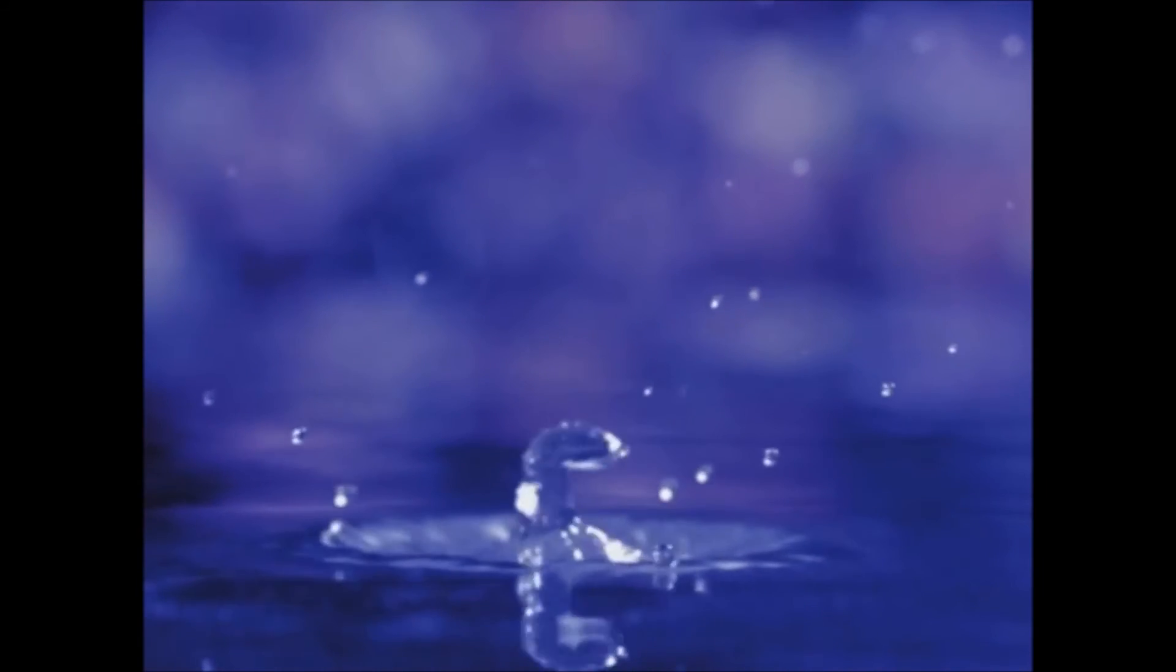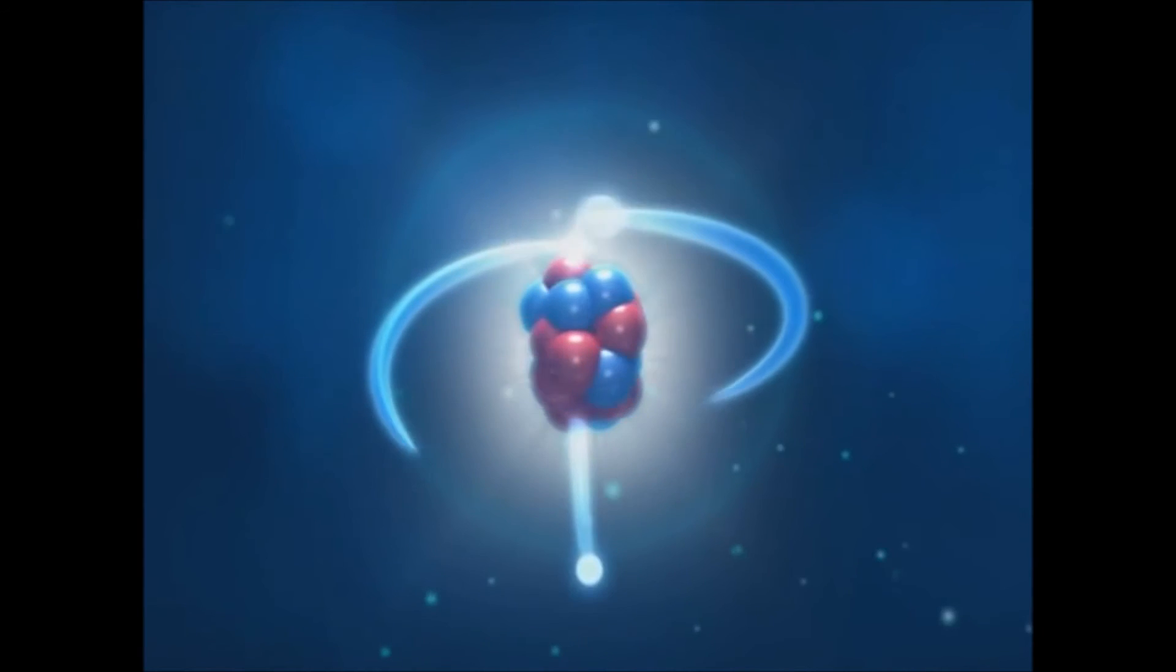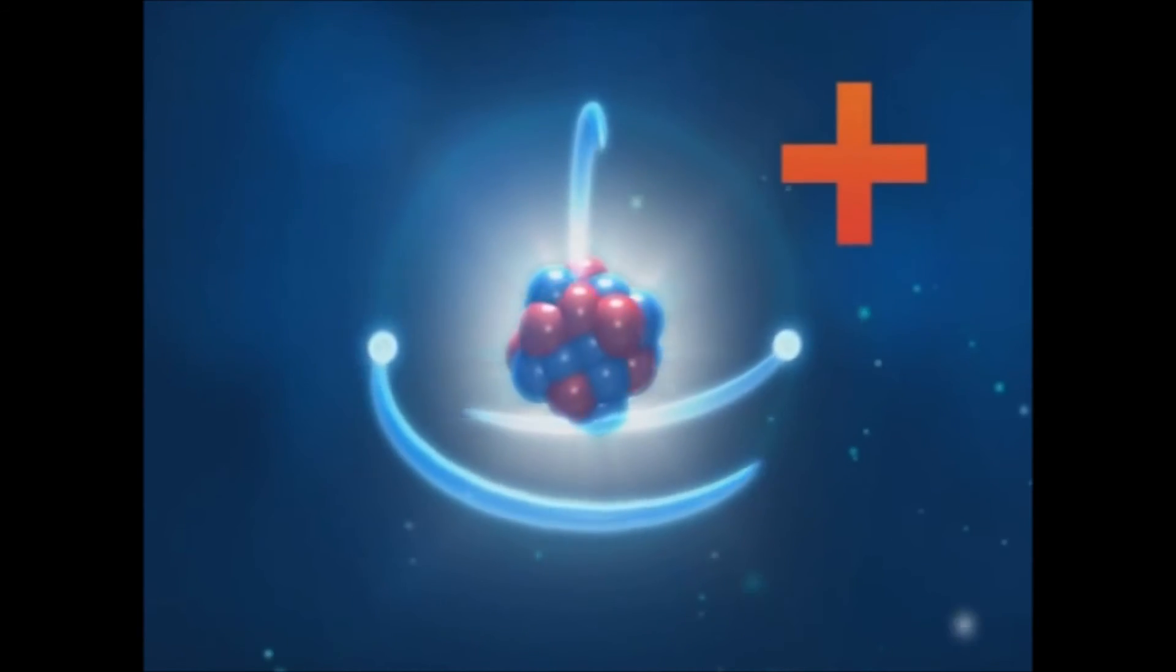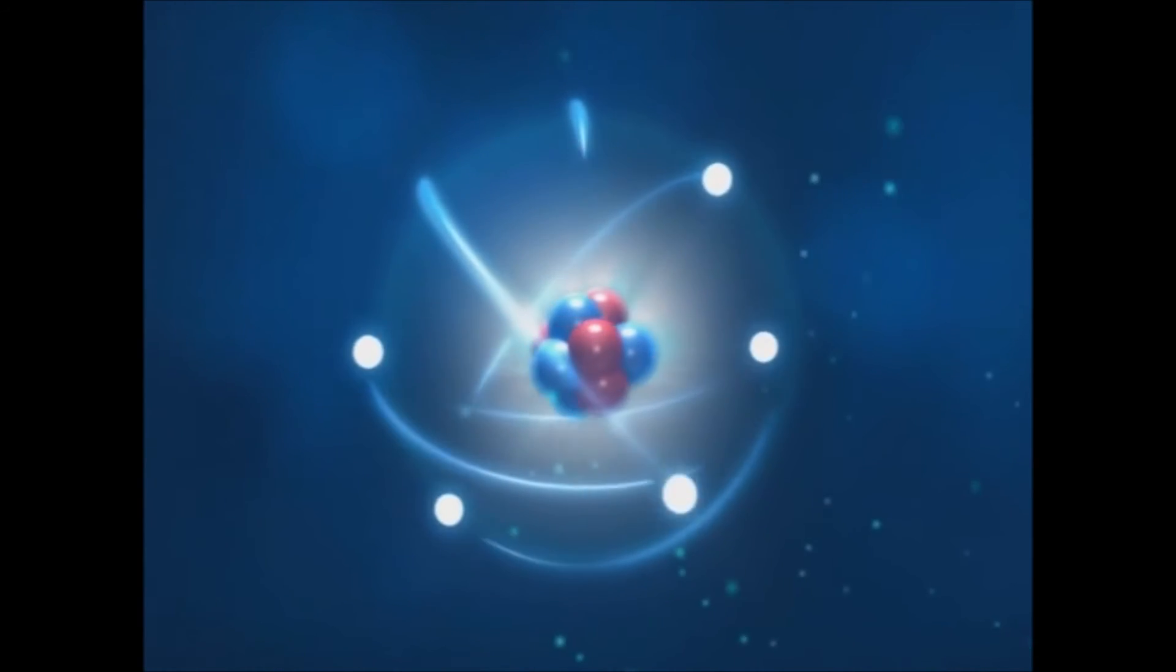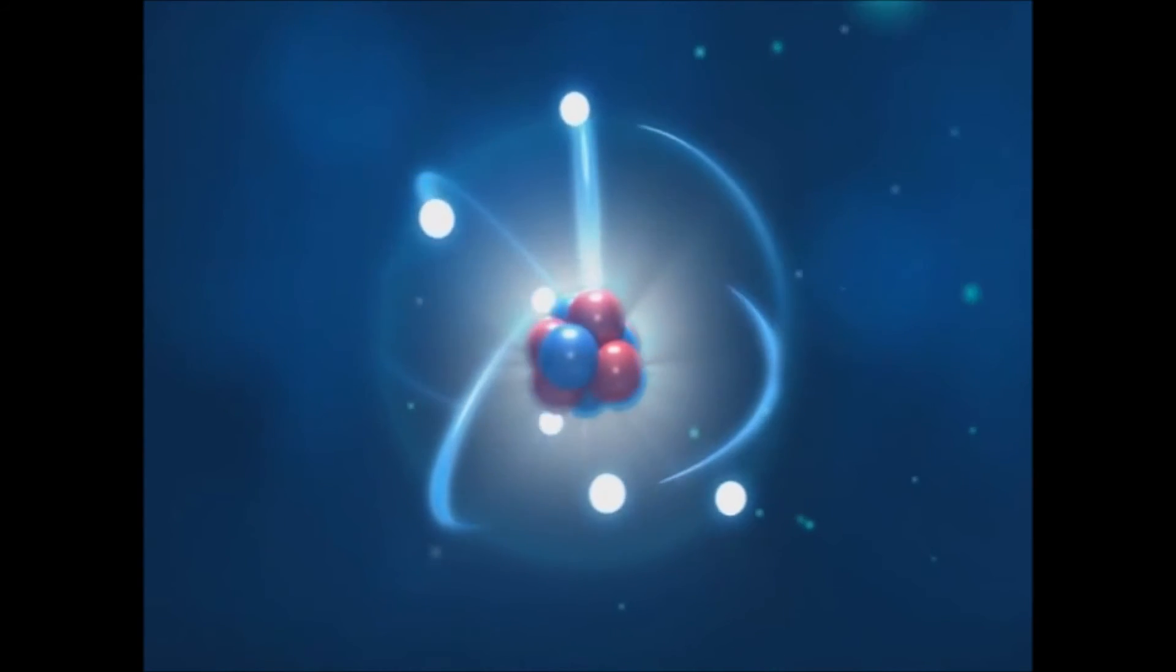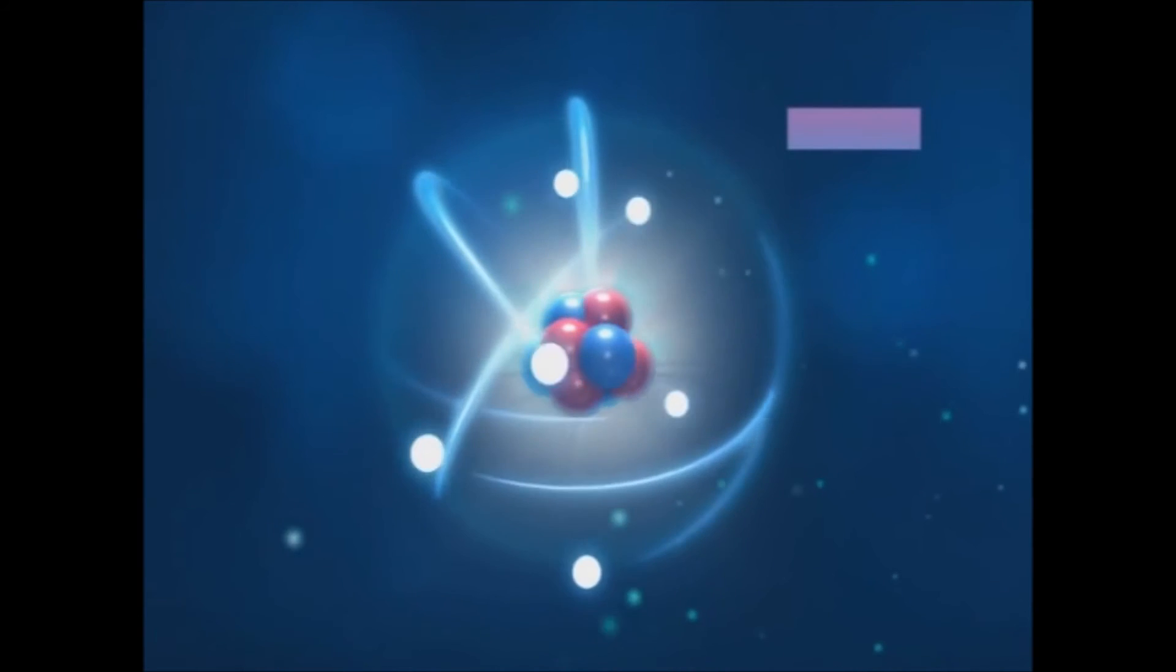Simply put, acidic water has more protons than electrons, resulting in a positive charge. Living water by Valora reverses the proton to electron ratio to increase alkalinity through a process known as ionization, which creates a negative charge.